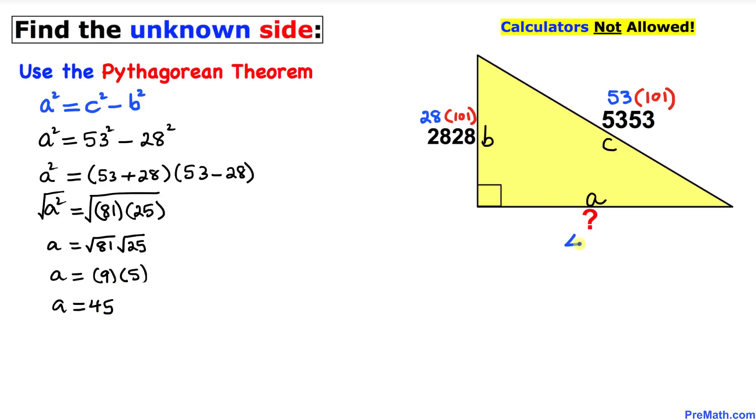Thus, our side a turns out to be 45. And now we can see that all these numbers are multiples of 101, as you can see over here. So this number has got to be a multiple of 101 as well.